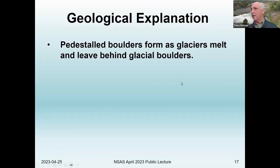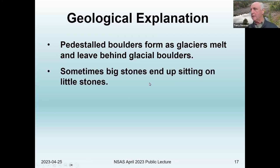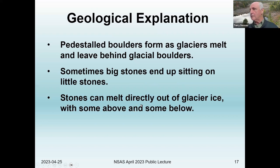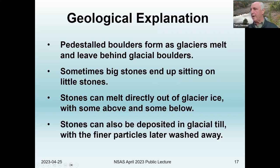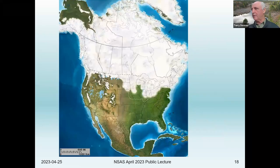Now let's look at the geological explanation. Pedestal boulders form as the glaciers melt and leave behind glacial boulders. In some cases, these big stones end up sitting on little stones just as the ice melts. Stones can melt directly out of the glacier ice and end up sitting on the pedestals, or they can come out of the till and the finer particles can be washed away at a later date. Some people find this hard to believe, so we'll look at some examples.